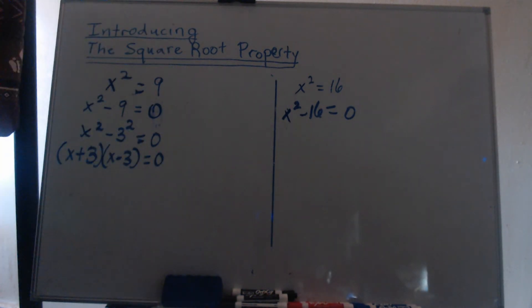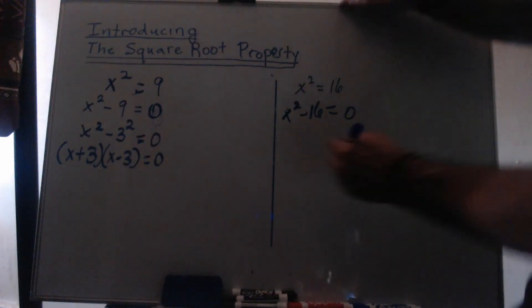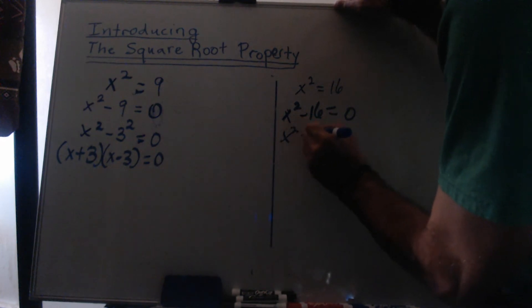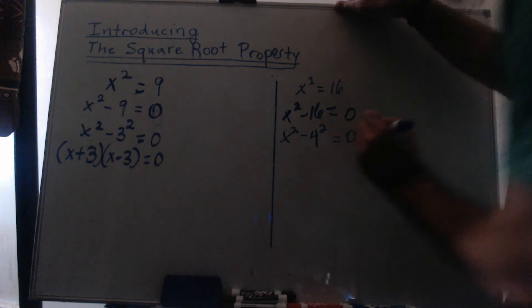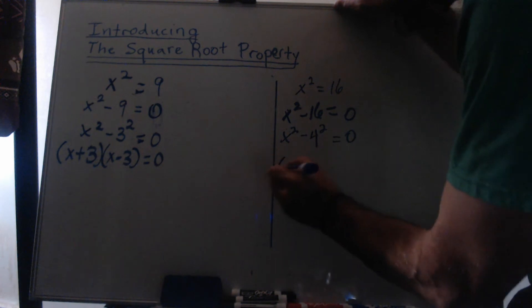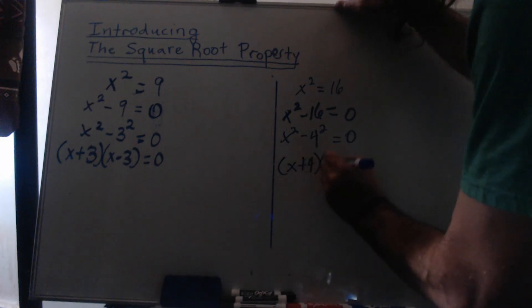So, 16 is 4 squared, so if you need, rewrite it this way. To realize what we would be plugging into the difference of squares formula, we'd get the quantity x plus 4 times the quantity x minus 4, and that's equal to zero.